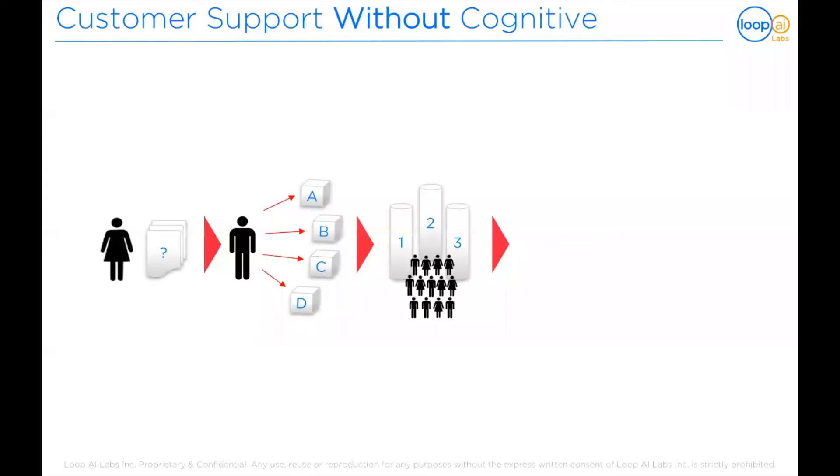We can take a look at customer support routing in the traditional or non-cognitive way. The process begins when a customer submits a service ticket. That ticket arrives to an agent who must then select the best suited competency center and agent to process the customer ticket — noting that if this step is done incorrectly, it can be costly. The agent then routes the ticket to a competency center. The receiving agent processes the request, sometimes taking up to seven days to issue a decision. Then finally, the agent's answer is received by the customer.